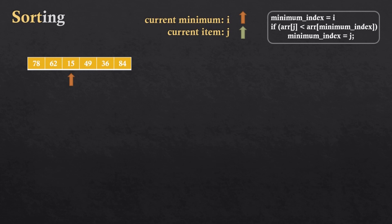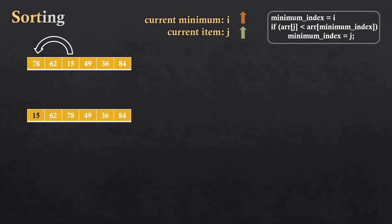Now 15 will be swapped with the first index. 78 and 15 will be swapped, and the new array we get is: 15, 62, 78, 49, 36, and 84. After one iteration we have the minimum value at the first index.